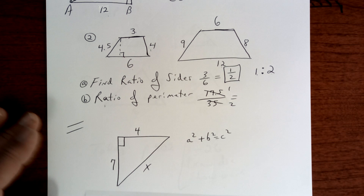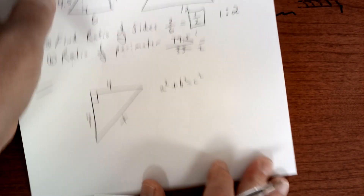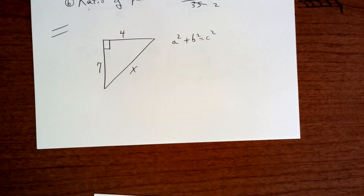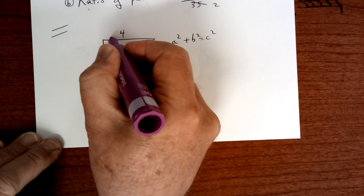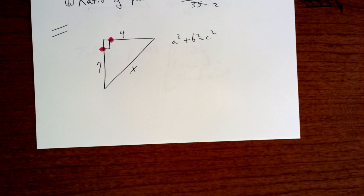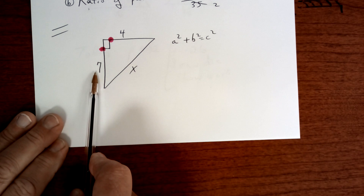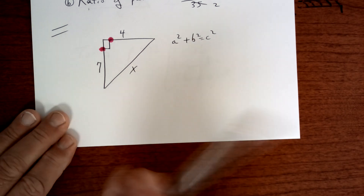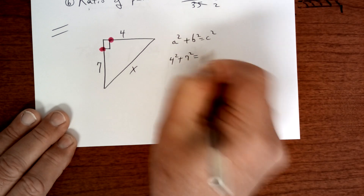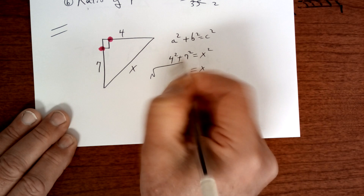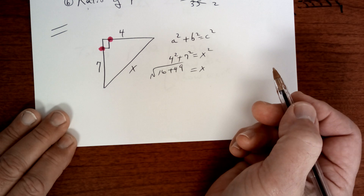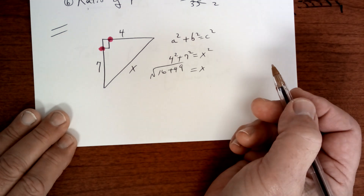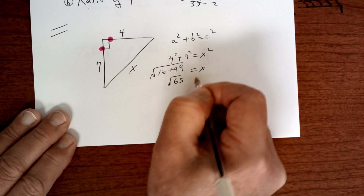Let's talk about today's work. Copy this one down and try this one — this is a review. Remember, you have a test this weekend. First thing I should see is dots — so put your dots on there. Those represent your legs: this is the short leg, long leg. That is your hypotenuse. So it's going to be leg squared plus leg squared equals x squared. So x is going to be the square root of 16 plus 49, which gives you the square root of 65. Use your calculator and finish that one up.